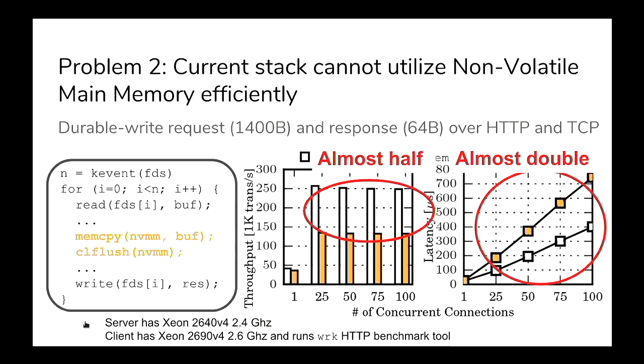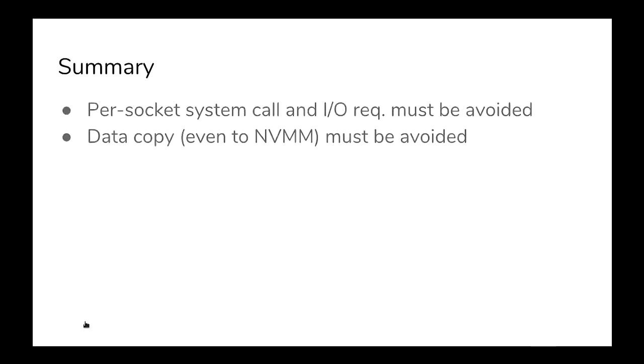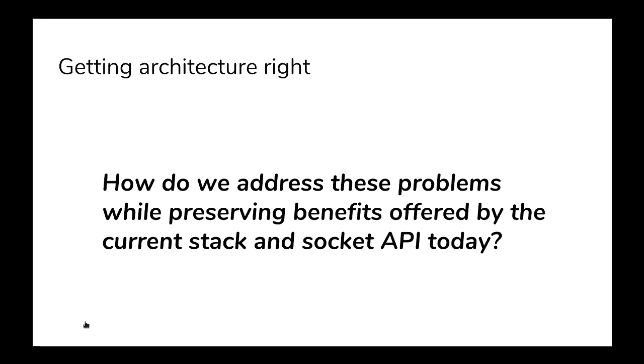The point is: even for non-volatile main memory, don't copy data if you want high performance. The summary of these two problems is: first, avoid per-socket system calls and I/O requests; and second, avoid data copies entirely — even for NVM, copying decreases throughput and increases latency.